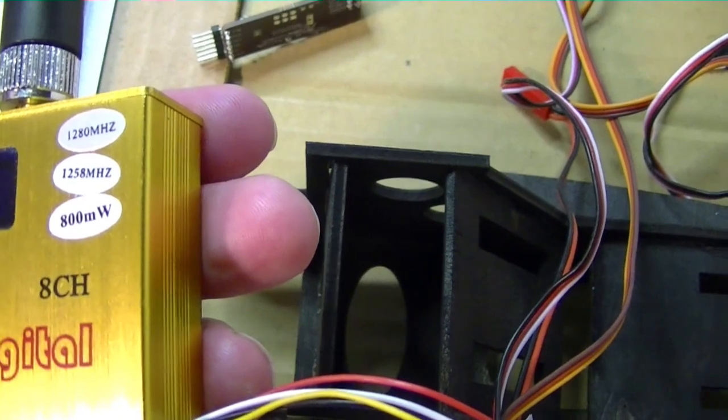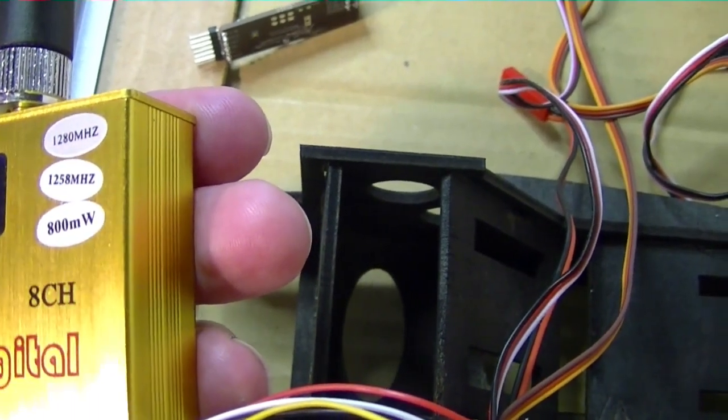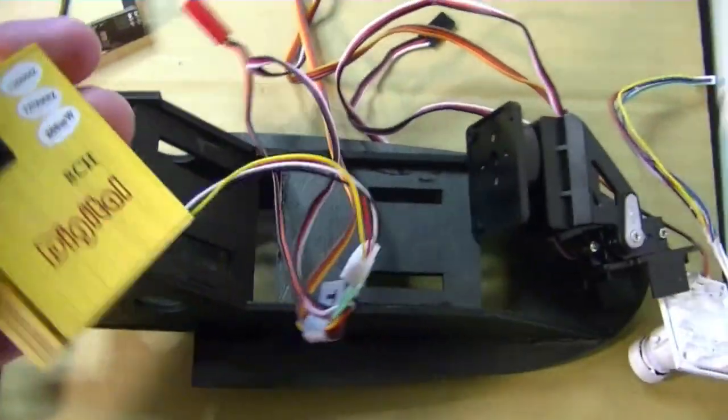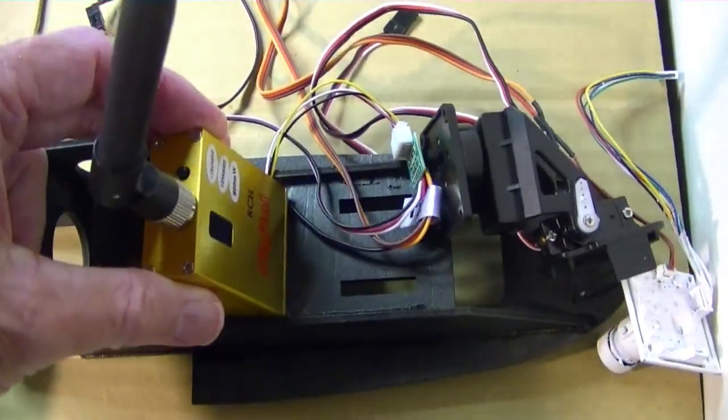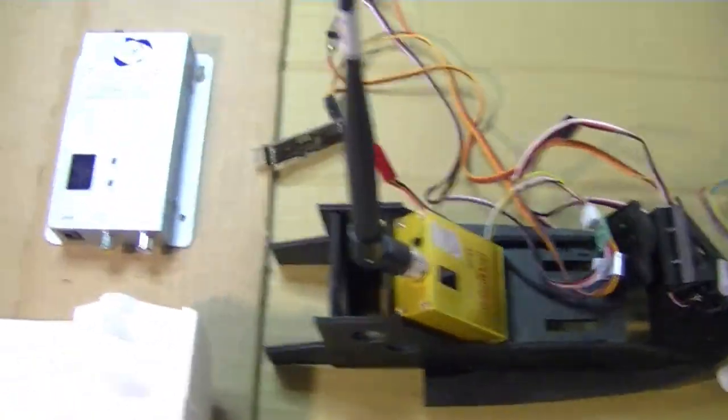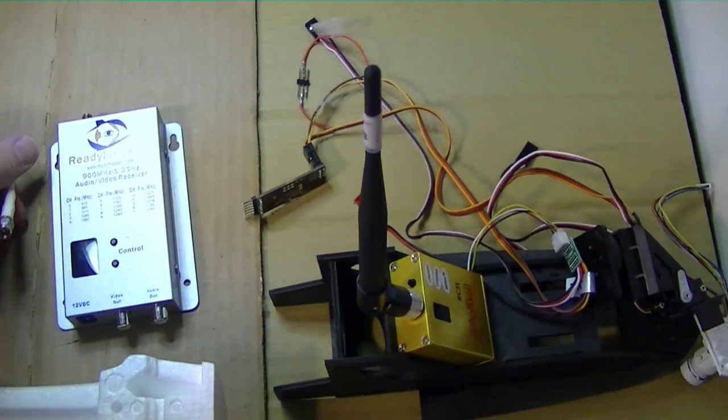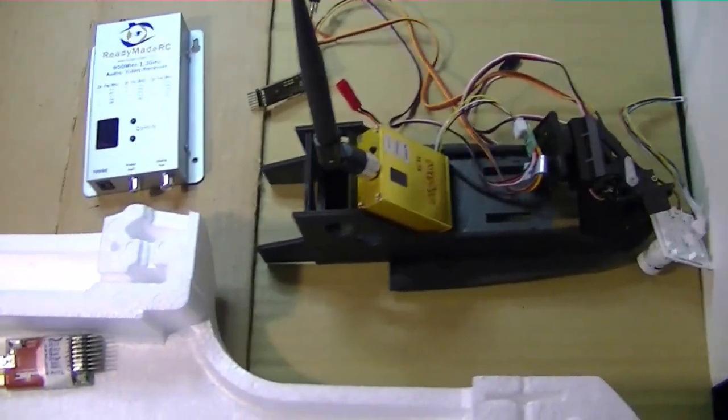It should say on the front of it here. I think you can read that. 1,258 or 1,280. 800 milliwatts. And the patch antenna looks like this. And that hooks on the receiver. So that is the second system.